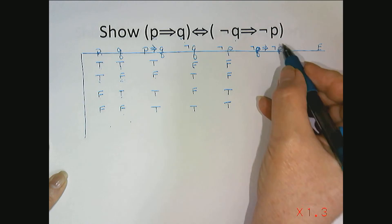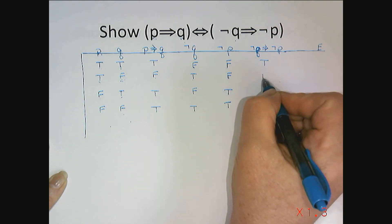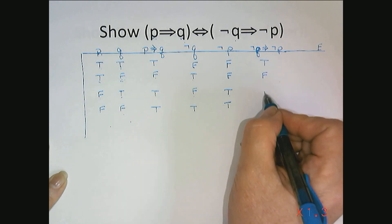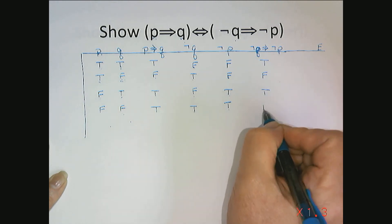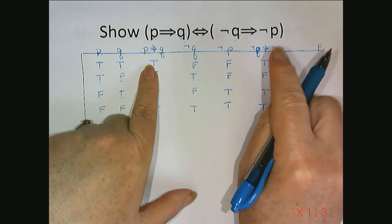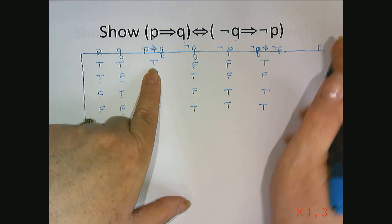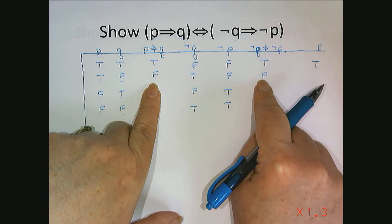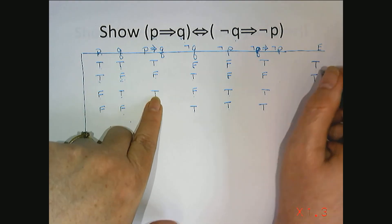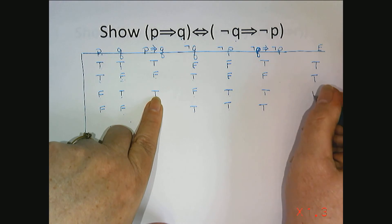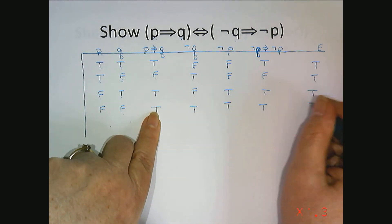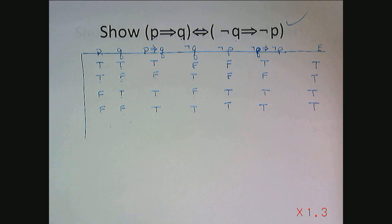Now looking at not q implying not p: false implying false is true; true implying false is false; false implying true is true; true implying true is true. Comparing the two columns p implies q and not q implies not p: true equivalent to true is true, false equivalent to false is true, true equivalent to true is true, true equivalent to true is true. So in all cases p implies q is equivalent to not q implies not p.